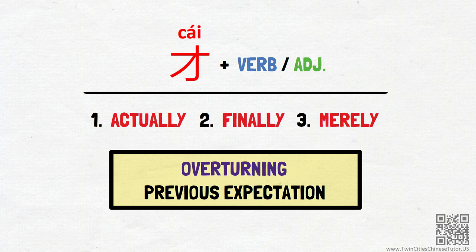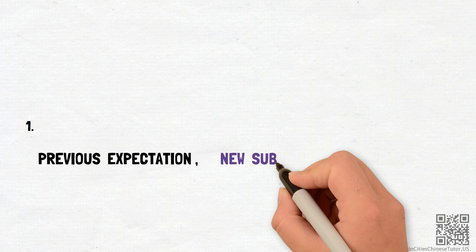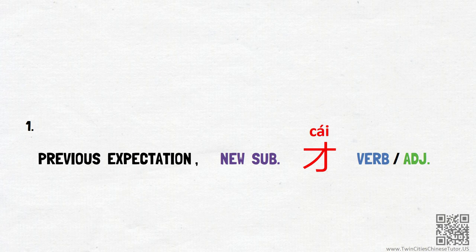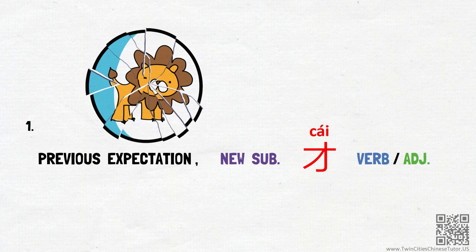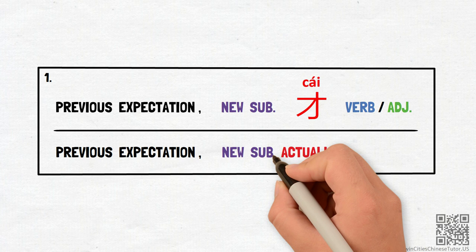In the very first scenario, we'll see 才 used in the following pattern: a statement to indicate previous expectation, new subject, plus 才, plus verb or adjective. 才 here is to emphasize that the truth is different from the previously stated expectation, and the new subject is what actually fits the expectation. So 才 here may be translated into English as 'actually' or 'instead,' and the pattern means: statement of previous expectation, new subject, plus 'actually' or 'instead,' plus verb or adjective.